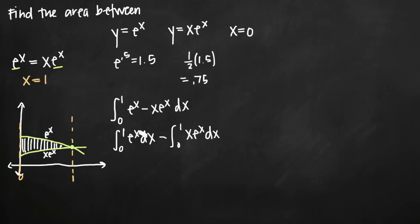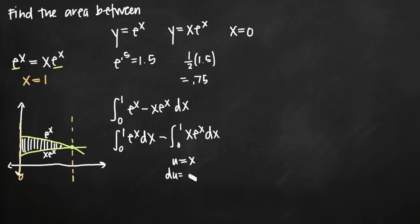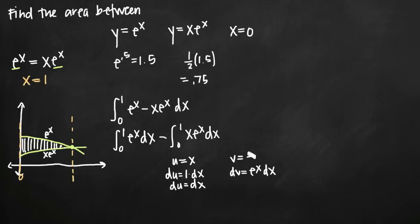The integral of e to the x is simply e to the x, so the first integral is straightforward. For the second integral, xe to the x is a product of two functions, so we need to use integration by parts. We set u equals x, so du equals dx. We set dv equals e to the x dx, so v equals e to the x. Now we have all the components for the integration by parts formula.